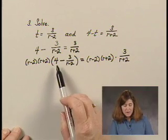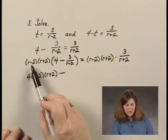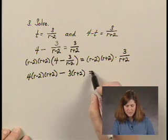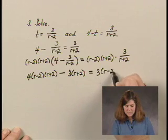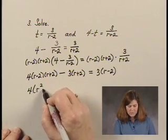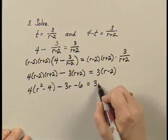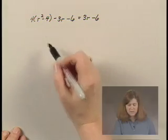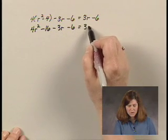Using the distributive property, I have four times (r minus two)(r plus two) minus (r minus two)(r plus two) times three over (r minus two), which simplifies to three times (r plus two). That equals (r minus two)(r plus two) times three over (r plus two), which simplifies to three times (r minus two). I can multiply (r minus two)(r plus two) to get r squared minus four. Multiplying out, I get four(r squared minus four) minus three(r plus two) equals three(r minus two), giving four r squared minus sixteen minus three r minus six equals three r minus six.